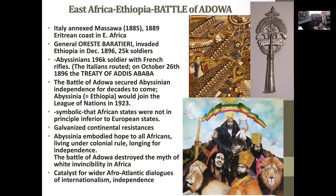That's largely why Italy went forward with the effort — first to annex Massawa, then a portion of the Eritrean coast. Then they made their move on Ethiopia in December 1896 with about 25,000 soldiers — only to come upon an Abyssinian army almost ten times their size.